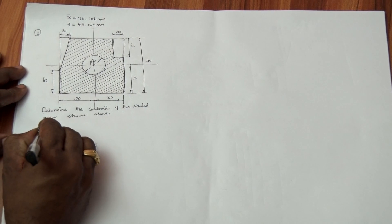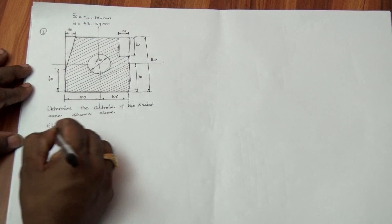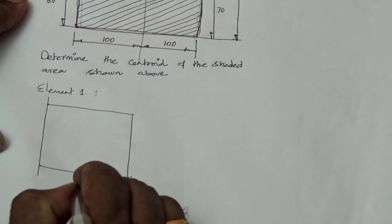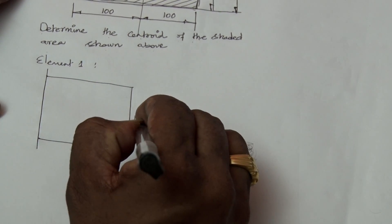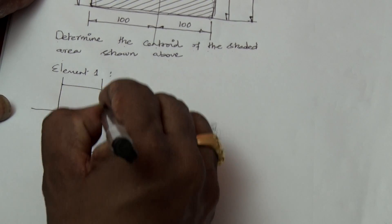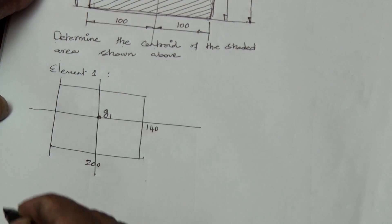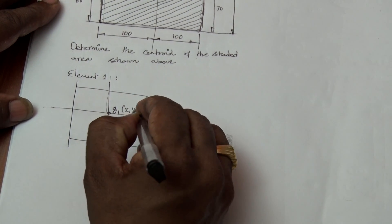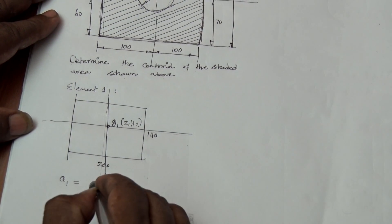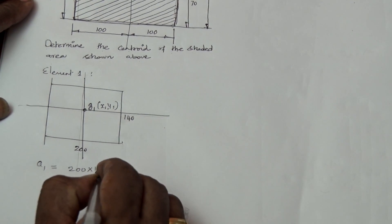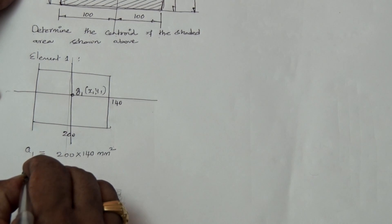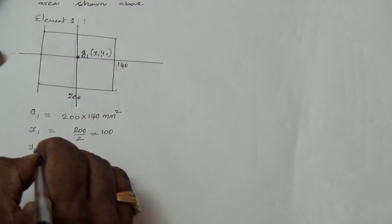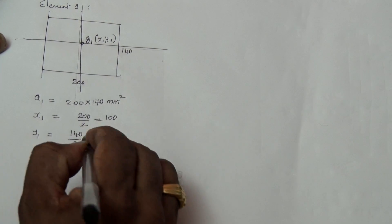Element 1: a rectangle of length 200 and height 140. The centroid lies at the intersection of the symmetrical length and breadth axes. Therefore, A1 is equal to 200 multiplied by 140 mm². X1 is equal to 200 divided by 2, that is 100. Y1 is equal to 140 divided by 2, that is 70.